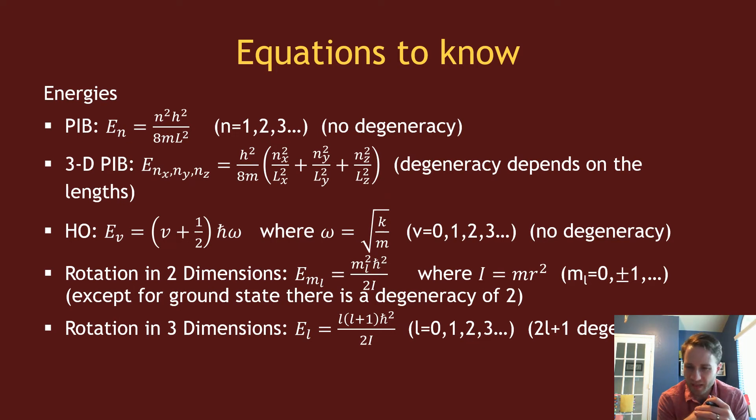The hydrogen atom, we should be familiar with roughly the form, but you don't need to memorize the exact equation. There's a bunch of constants: mass of electron, charge of an electron, permittivity, free space, and so on. It's not worth trying to memorize the entire thing.